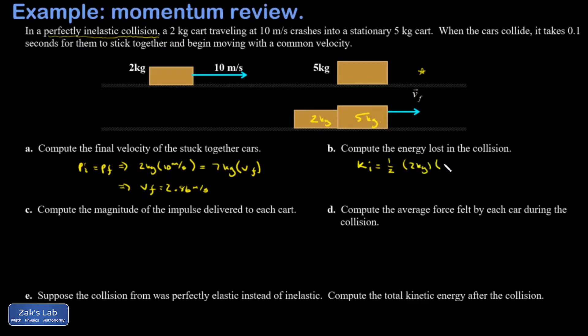So one-half times 2 kilograms times V initial squared. Half of 2 is just 1, so I get a nice round number, 100 joules. And in the final state, 7 kilograms moving at 2.86 meters per second. I'd like to have that written up here for reference. And let's get this computed. That's 28.6 joules. And we'll do a quick subtraction problem. That's 71.4 joules missing.